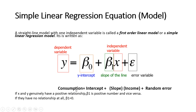So: consumption = intercept + β₁ × income + random error term. If x and y generally have a positive relationship, β₁ is a positive number; if they have an inverse relationship, β₁ is a negative number; and if there is no relationship, β₁ equals zero. β₁ shows the nature of the relationship between the independent variable x and the dependent variable y.